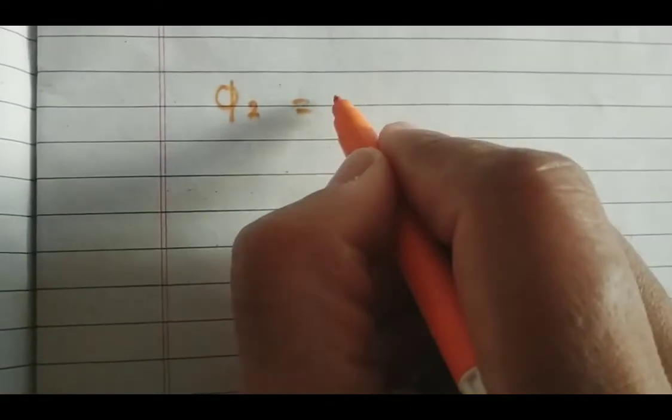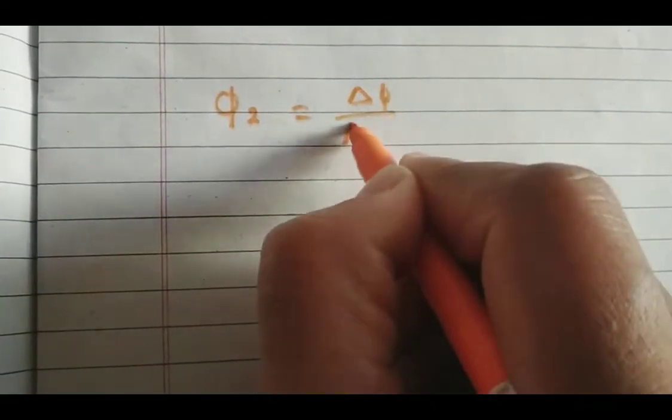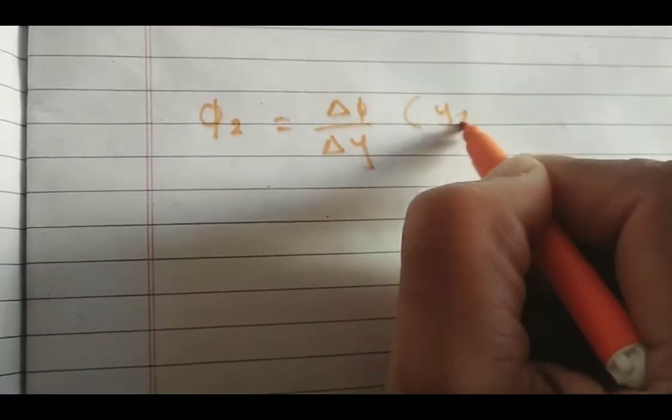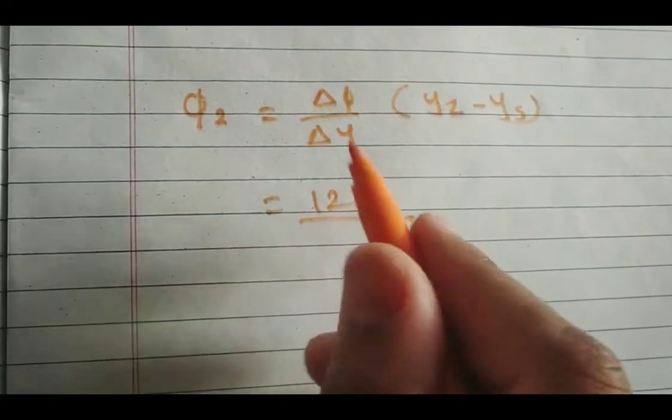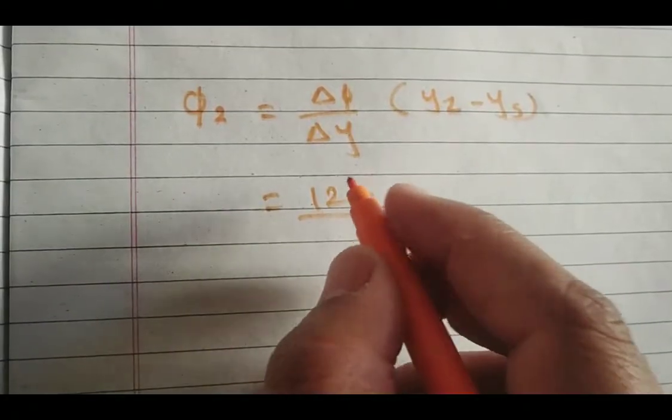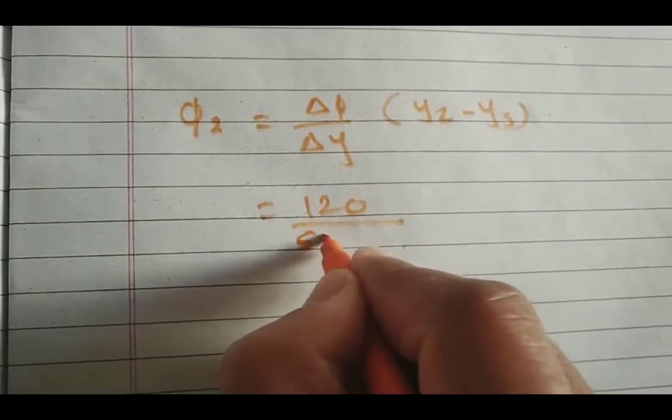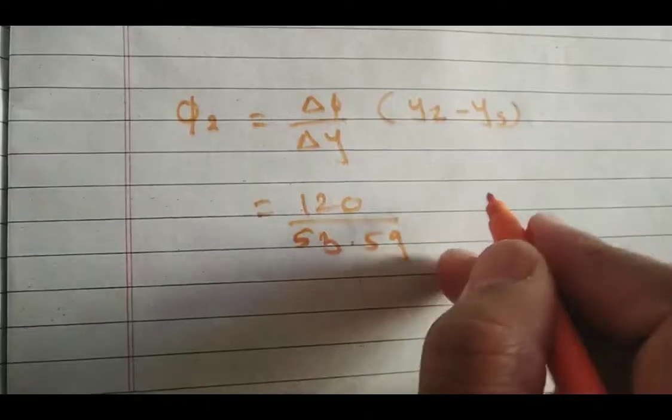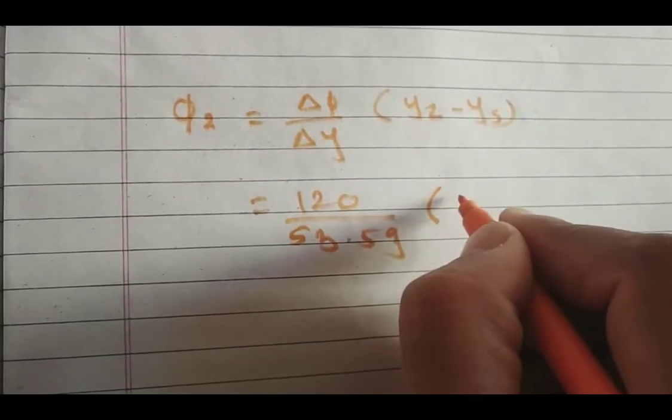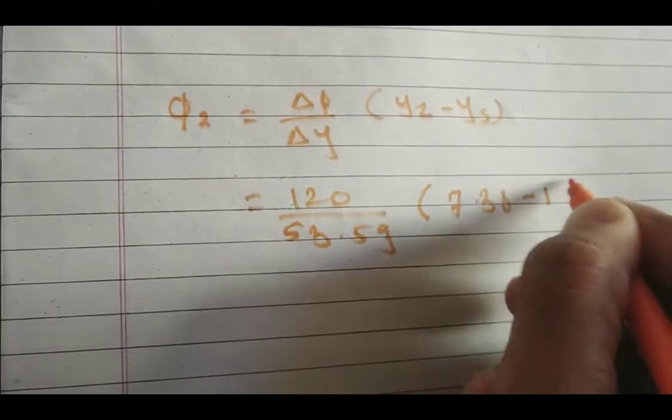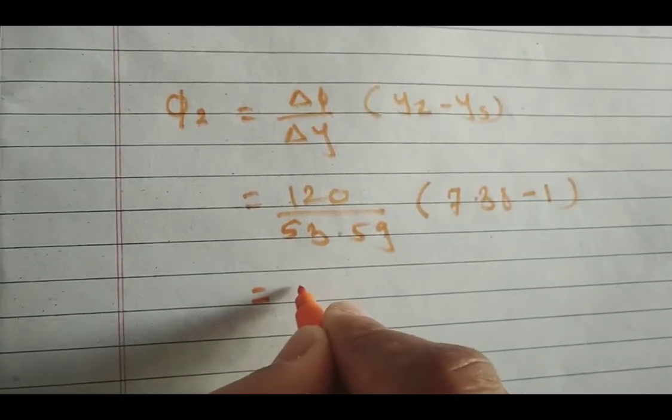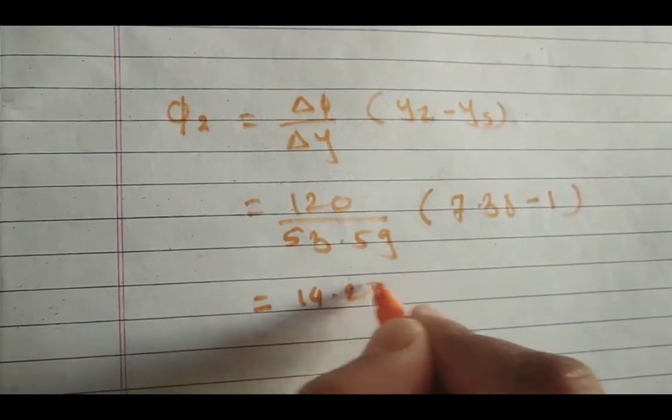Similarly for phi_2, the formula is (delta_phi / delta_Y)(Y2 - Ys). So 120 divided by delta_Y, which is 53.59. Y2 is 7.38 minus 1, and you will get phi_2 = 40.28 degrees.